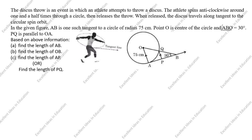Hi students, welcome to my channel 'Excellent Ideas in Education.' Today we are going to solve this case study problem. This is a board exam problem. The discus throw is an event in which an athlete attempts to throw a discus. The athlete spins anticlockwise around one and a half times through a circle, then releases the throw.